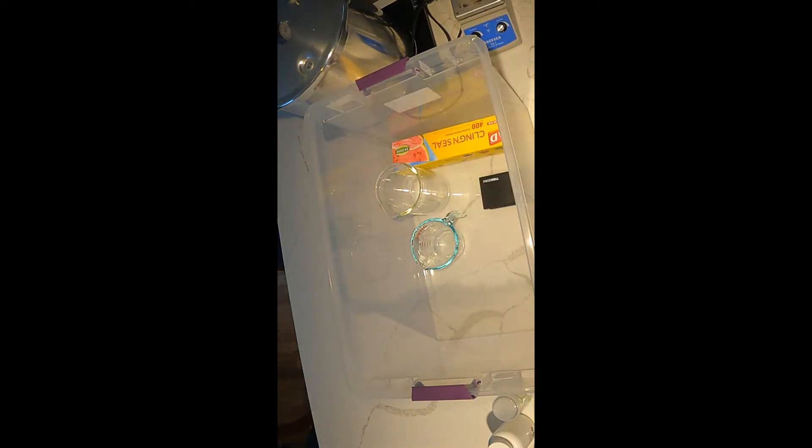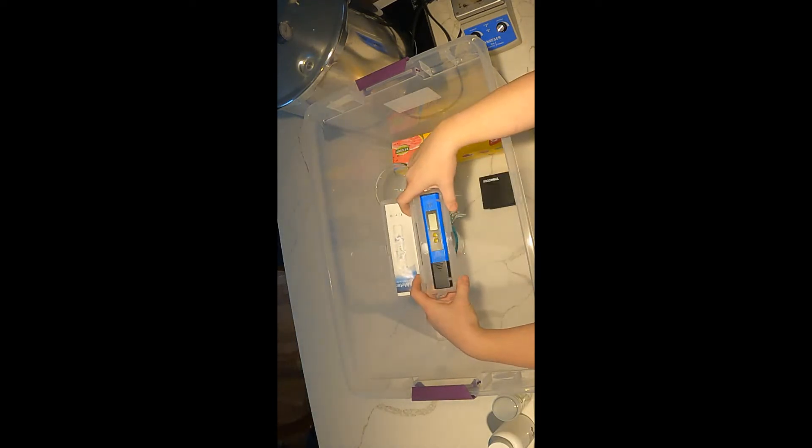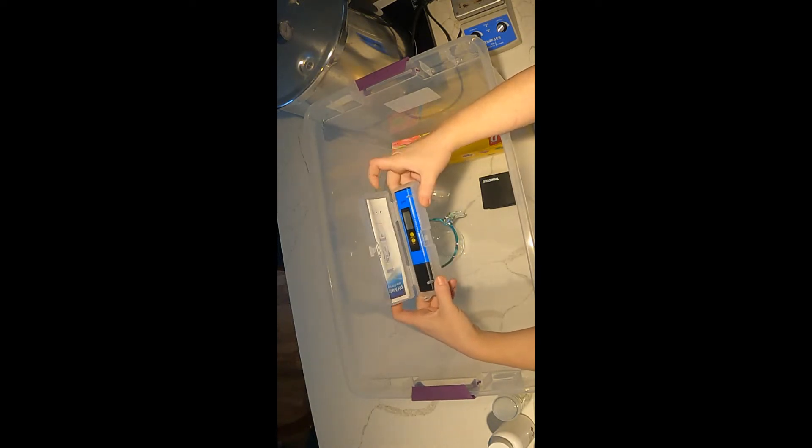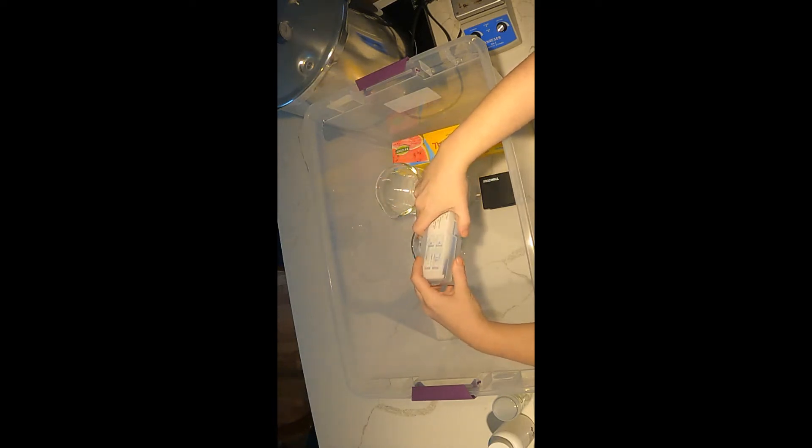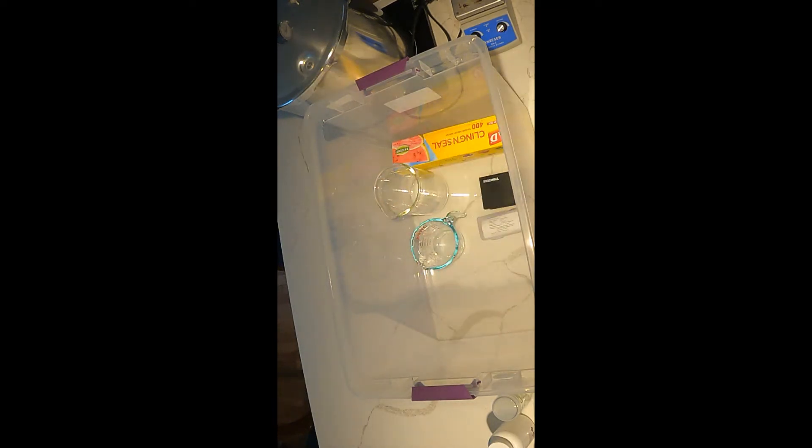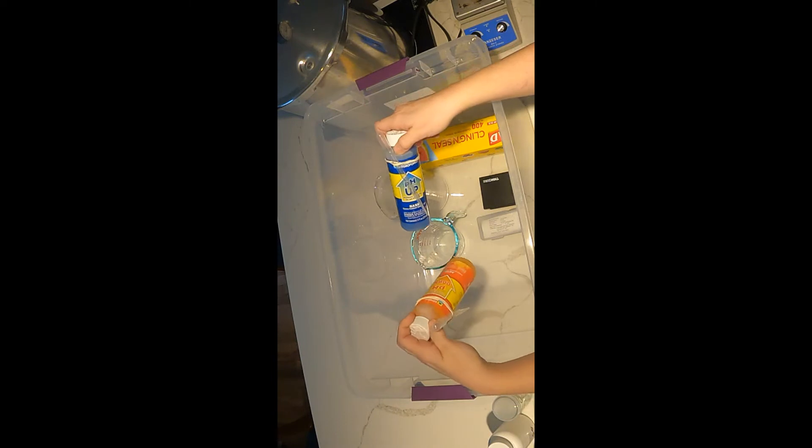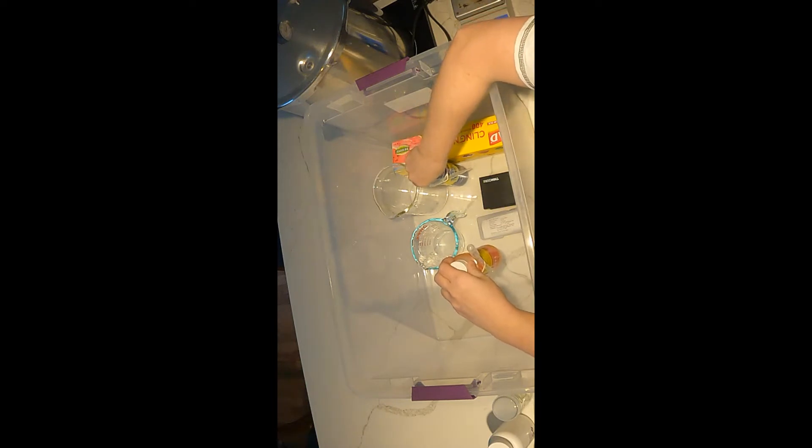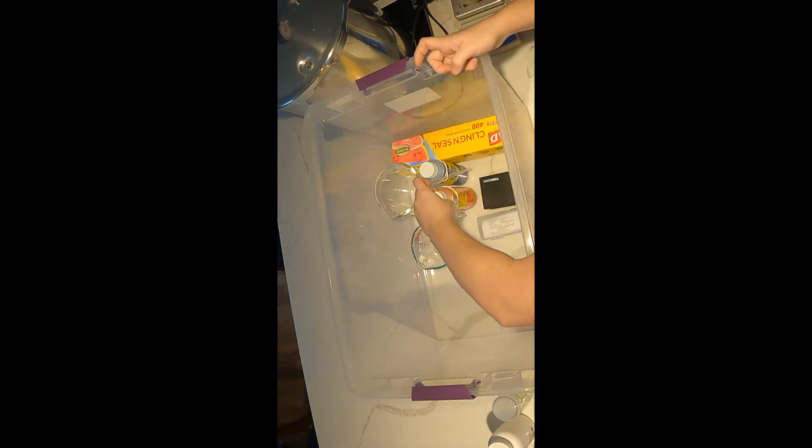You're going to need a way to measure the pH. The media has a tendency to be acidic. I will be using an inexpensive meter. You can also use strips. You don't want your media to be too acidic or your plants won't grow. Now that you know the pH, you're going to need to adjust it. I use hydroponics pH up and down. You can also use baking soda and vinegar. Baking soda would be the equivalent of pH up and vinegar would be the equivalent of pH down.